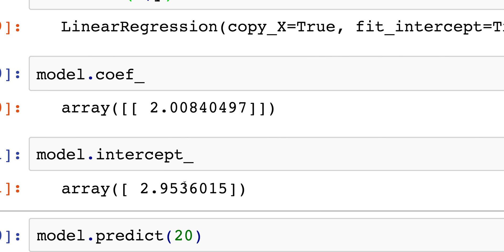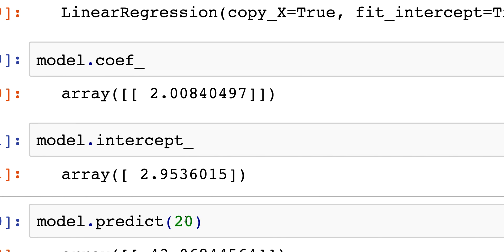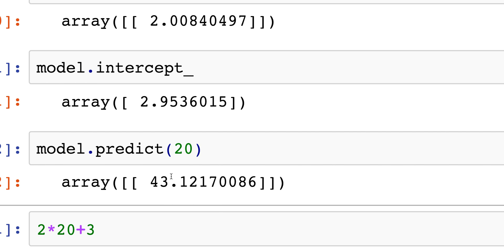The best thing about scikit-learn is that you can go model.predict. In this case what I'm putting in here is my x value and then I get 43.